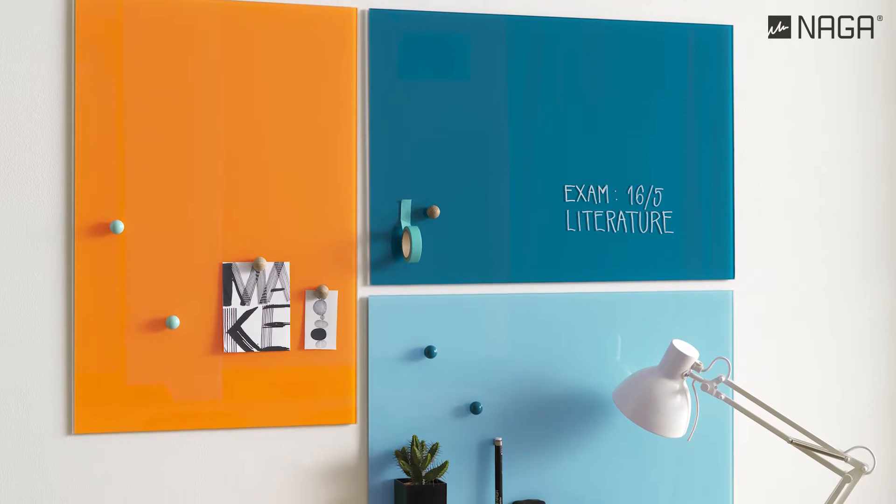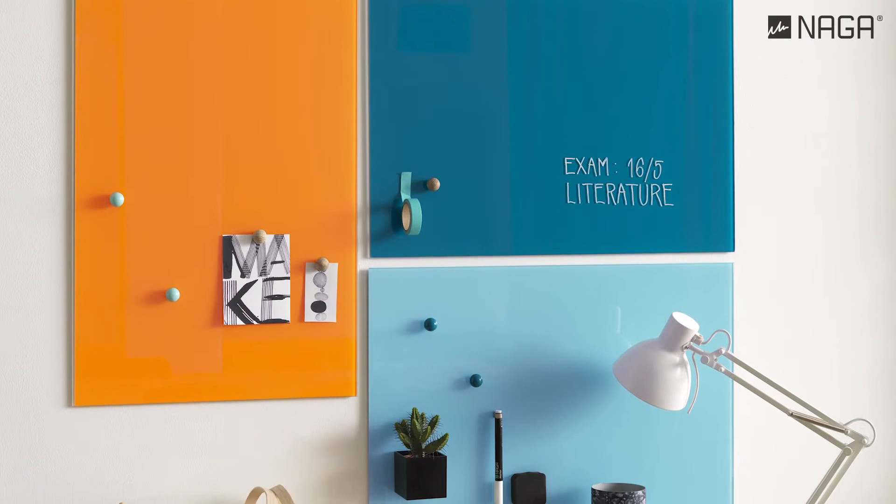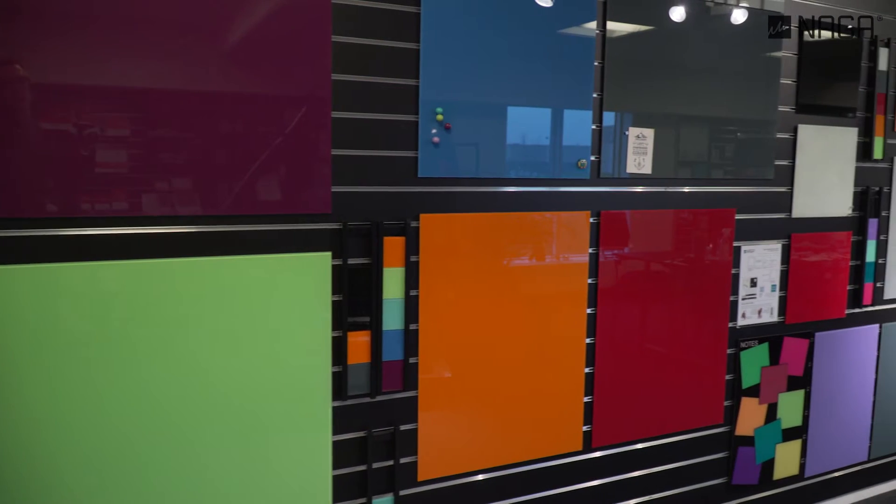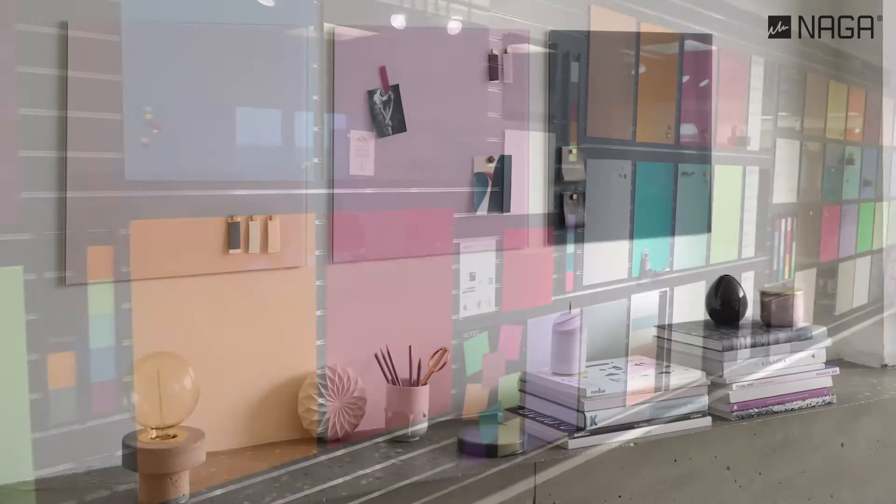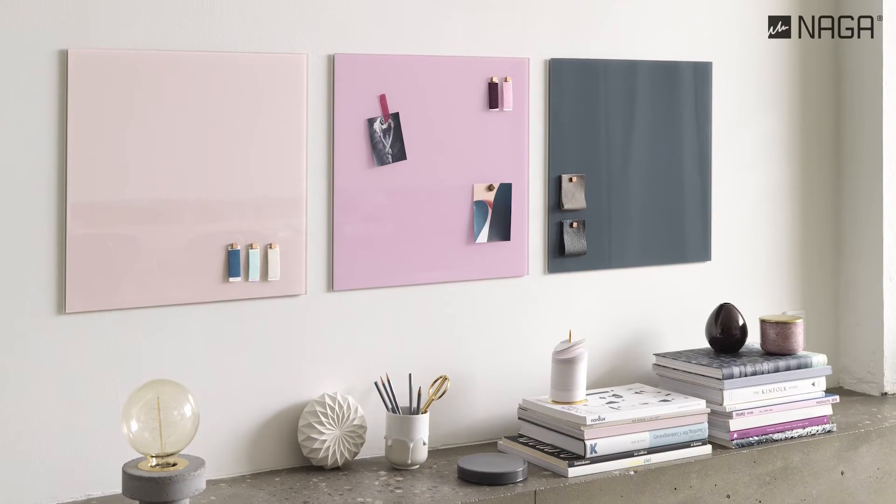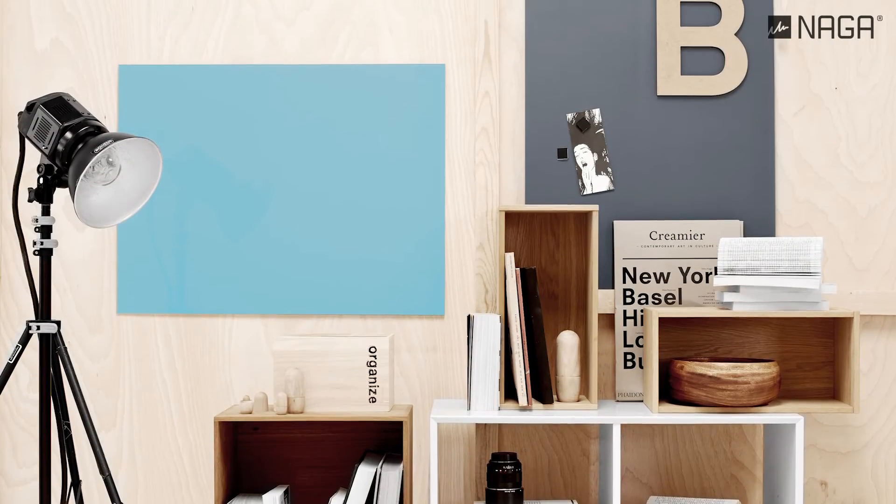Naga glass boards are available in small, large and extra large, and in a variety of colours. They can be combined in countless ways for both decorative and practical use.